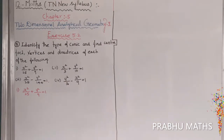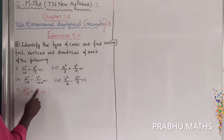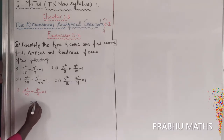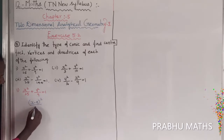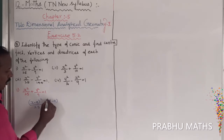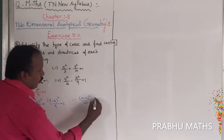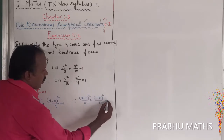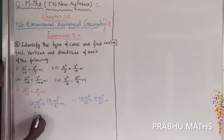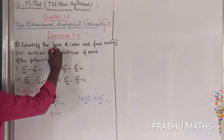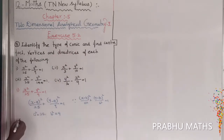That is the identification of the conics. The first type is x squared by a squared plus y squared by b squared. The value of x squared by 25 plus y squared by 9 equals 1, so a squared equals 25. The standard general form is x minus 0 whole squared divided by 25 plus y minus 0 whole squared divided by 9 equals 1. So a squared equals 25 and b squared equals 9.